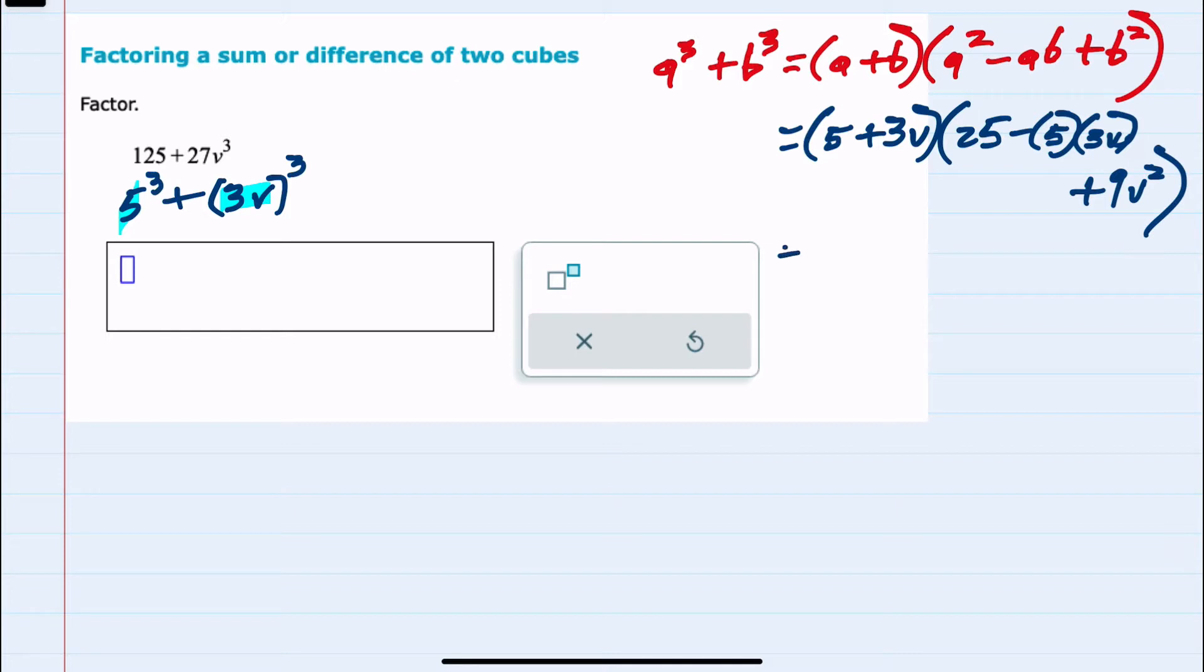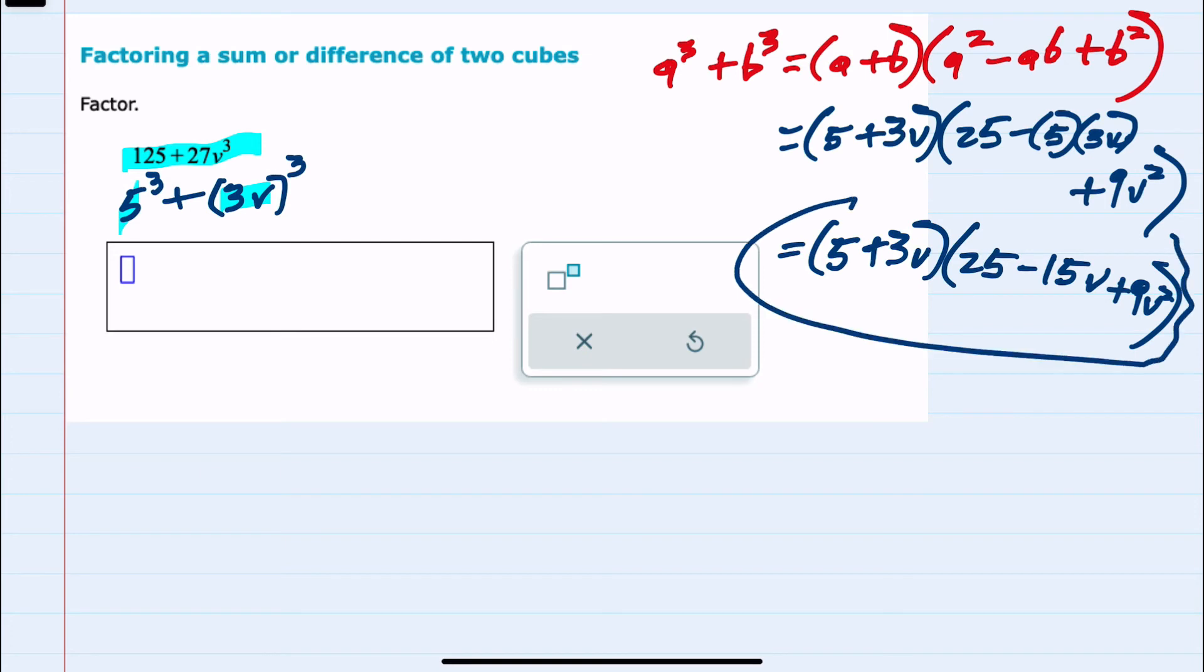Simplifying a bit here, the first part of the expression, 5 plus 3v, can't be simplified. For the second part, we have 25 minus 5 times 3v is minus 15v, and then bringing down the plus 9v squared. We have factored the original expression by writing it as the sum of two cubes, and then just substituting in our a's and b's into the formula, giving us this as the factored form.